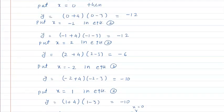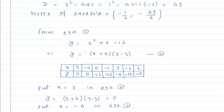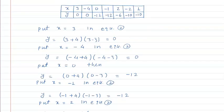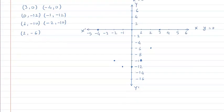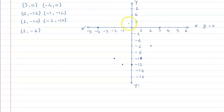Inke vertices ko represent karna hoga join karne se pahle. Vertices of parabola minus 1 by 2 aur minus 49 by 4, jo lagbhag 12 se thoda zyada hai. To minus 1 by 2 yahan par raha aur 12.2 ke kareeb yahan vertex hoga. Ab in points ko free-hand join karte hain — is tarike se graph mil jayega.